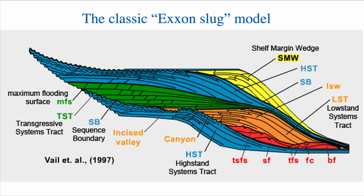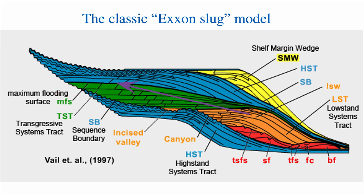That LST is deposited basin-inward because base level or sea level is so low. Once we are in the lowstand situation, the only thing that can happen is for sea level or base level to rise again. Then we have deposition of what is known as a transgressive system tract, or TST — that's when base level rises. Once base level has reached its maximum, we have a very important surface known as the maximum flooding surface, or MFS. That's when the shoreline trajectory changes from moving landward back to progradation and moving basinward, and we enter what is known as the HST, or the highstand tract.